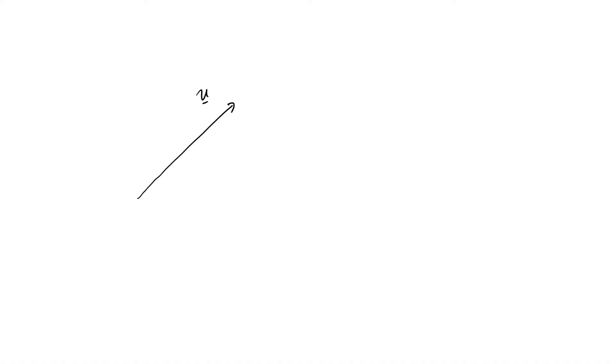We're going to start by looking at how much vectors are aligned. This is called projection. Imagine we have a vector u, and we want to understand how much it is like another vector v. We'll do this by letting u cast a shadow on v in a particular way. We want to make it so that the vector difference between u and its shadow is as small as possible, and this happens when we make this difference orthogonal to v.